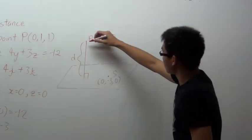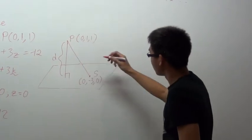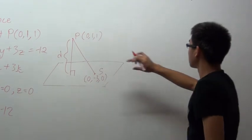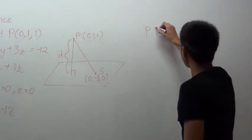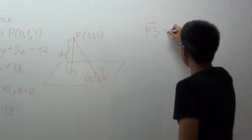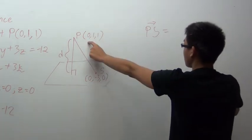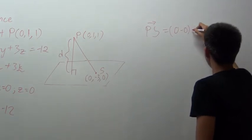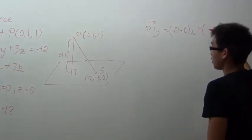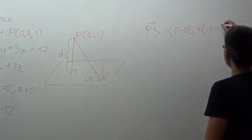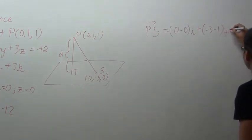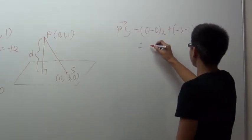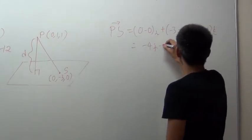Now we connect P and S together and find the vector PS. The vector PS is the coordinates of S minus the coordinates of P. That's (0 - 0)i + (-3 - 1)j + (0 - 1)k, which gives you -4j - k.